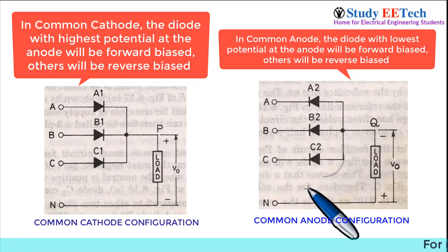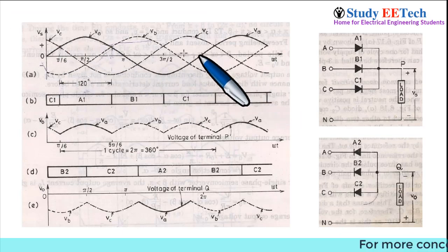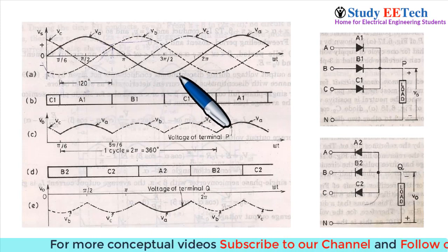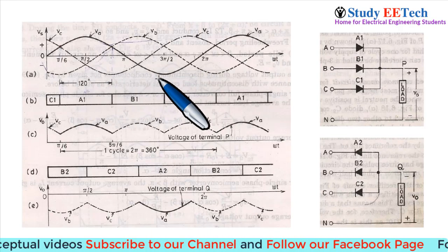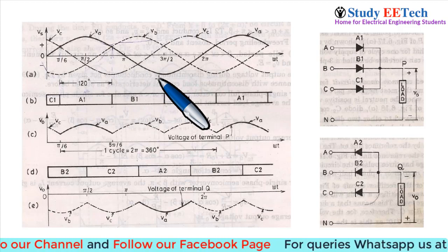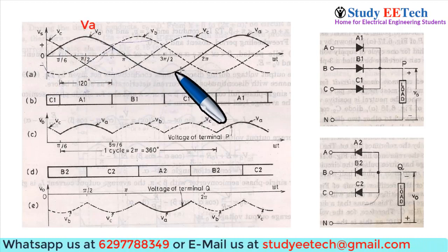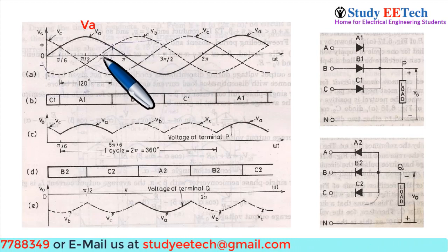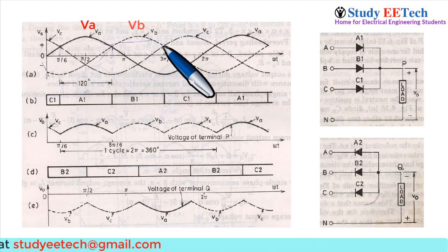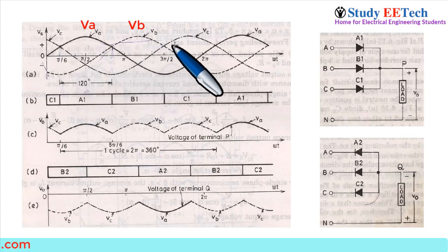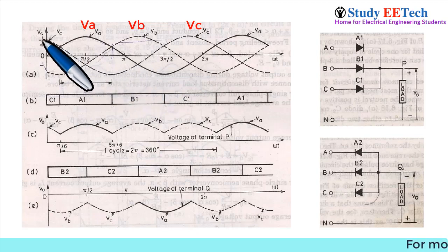Now let us come to the three-phase voltage. How to draw three-phase voltage has been explained in one of my other videos — you can go to the playlist and the link will be in the description. The phase A voltage is this one, phase B voltage starts from 180 degrees and is this voltage VB, and extending it — VC will be this voltage.